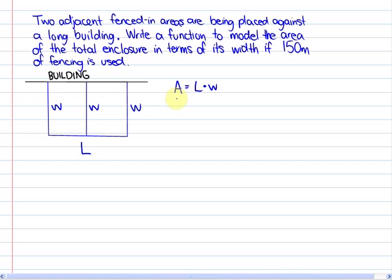And the relationship between the lengths and the widths is that one length plus three widths equals 150 meters of fencing. And if we isolate the length we'll be left with length is equal to 150 minus three widths.